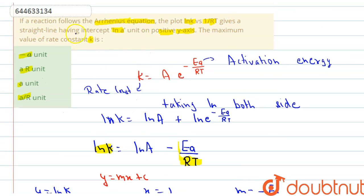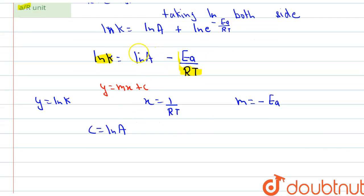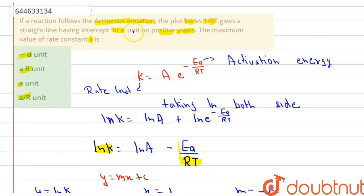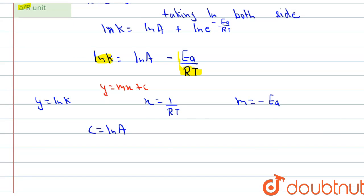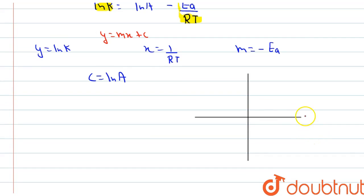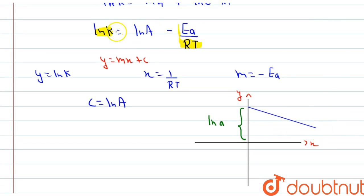In this question, the straight line has intercept lnA. Let me draw the coordinates: this is our x-axis and this is our y-axis. There is a straight line with intercept equal to lnA on the y-axis. Here x is 1/RT and y is lnk, and the slope tan(theta) equals minus activation energy.